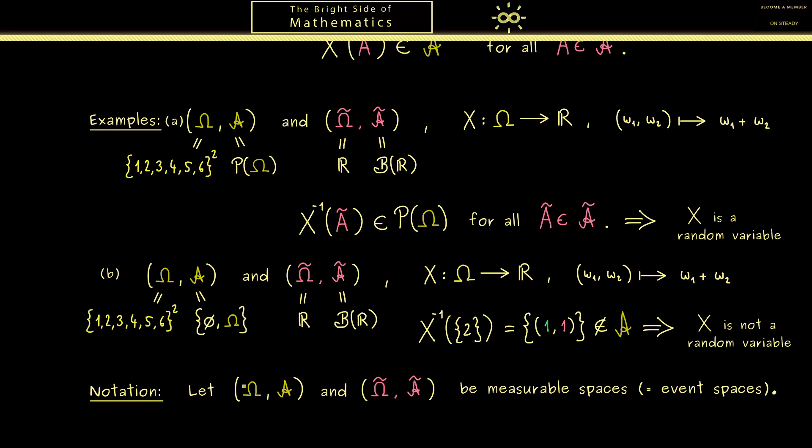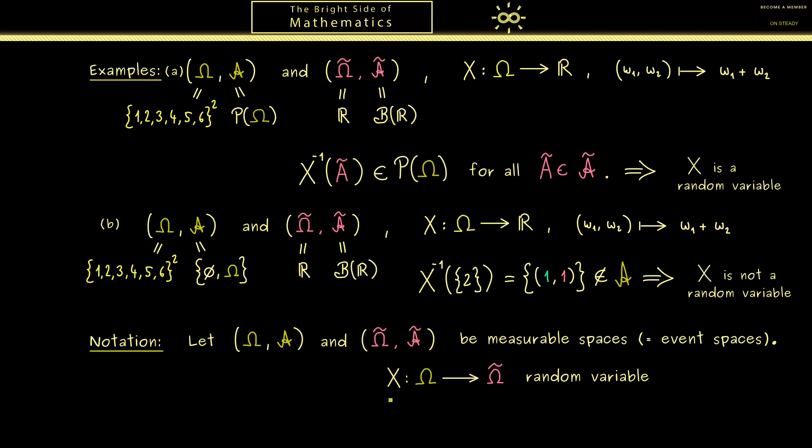Now I want to close this video with an important notation. Assume again that we have two measurable spaces, also called event spaces. Moreover, let's also fix two other things: first we have a random variable X as before, and secondly, maybe not so surprising, we have a probability measure P defined on the first event space on the left. This means when we take any set Ã from the sigma algebra Ã and look at the pre-image under X, then we can calculate the probability of this event, simply because we know by the definition of a random variable that this set lies in the sigma algebra A. Hence P of this set makes sense.